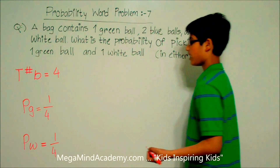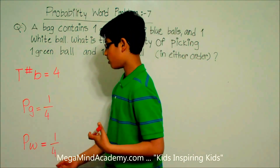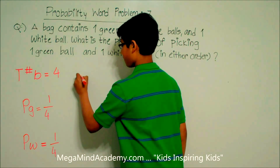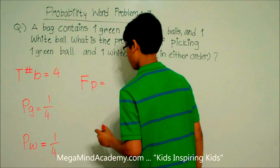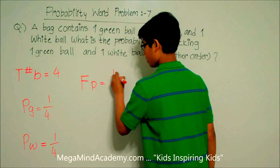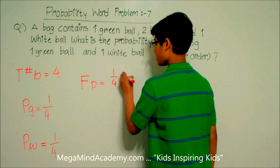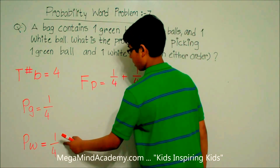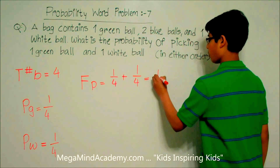The probability of picking the green ball or the white ball as your first pick is equal to one fourth plus one fourth. One fourth plus one fourth is equal to one half.